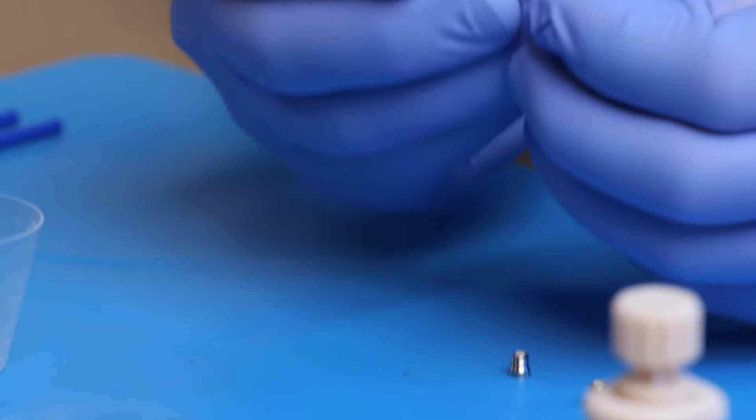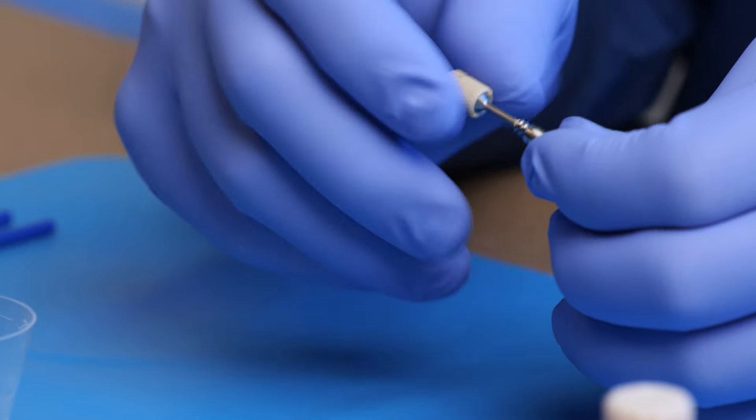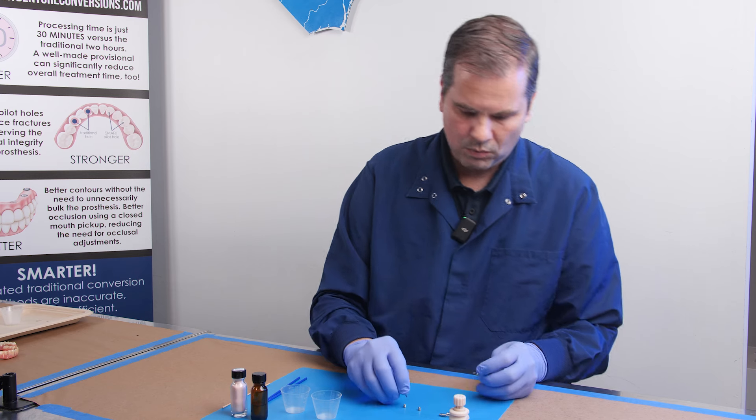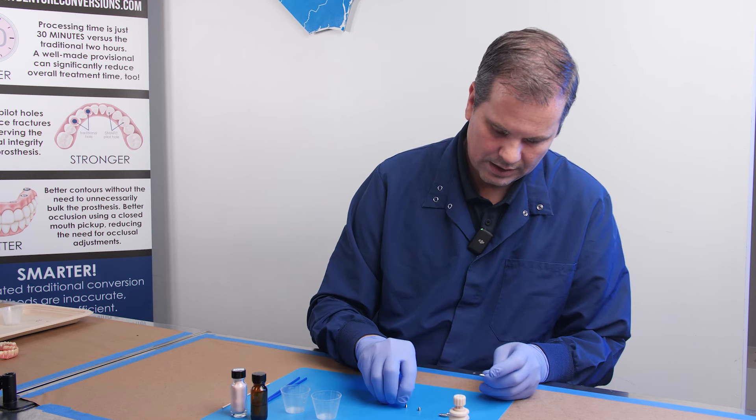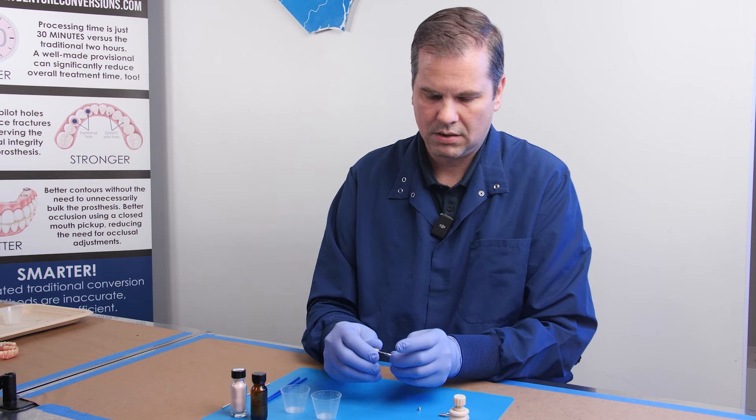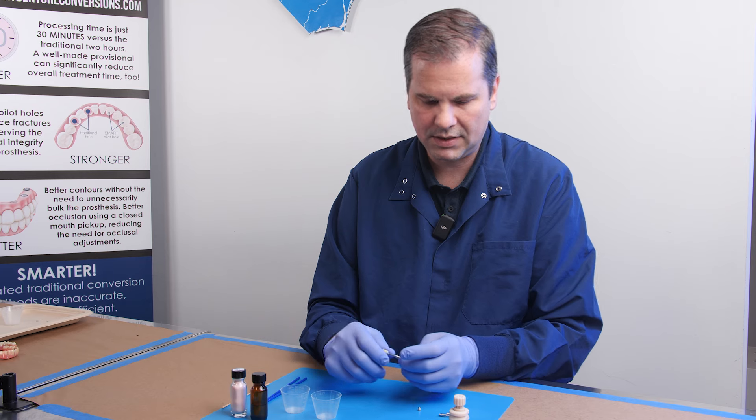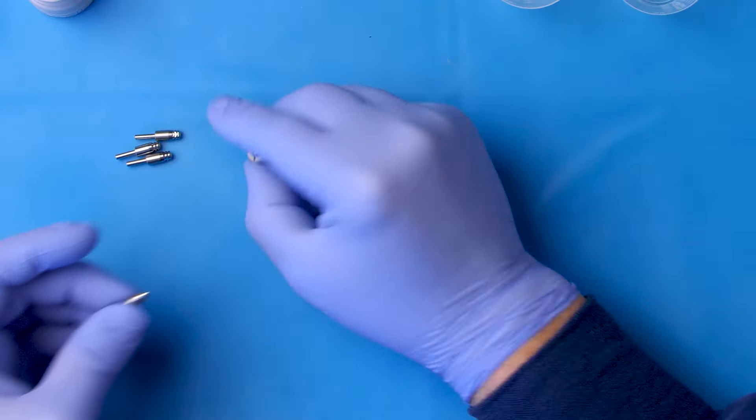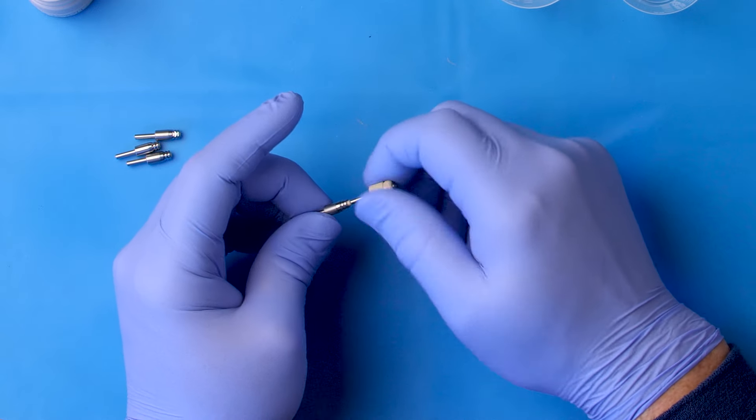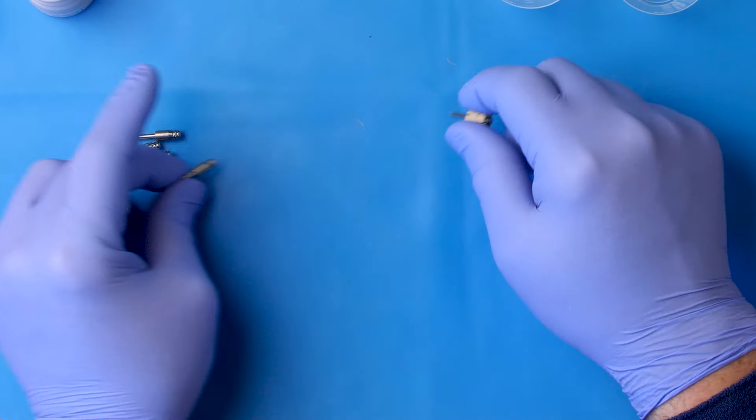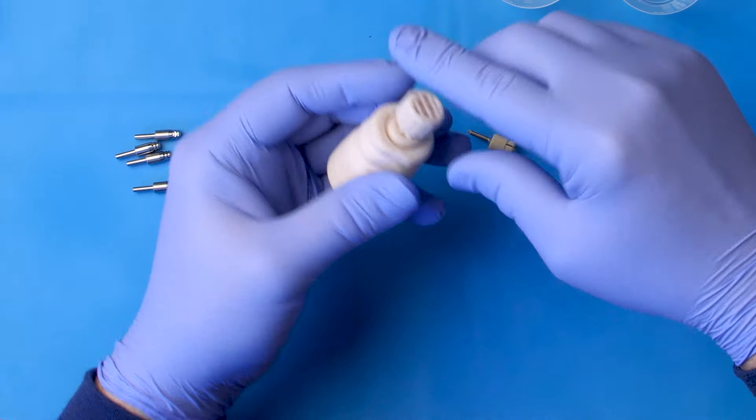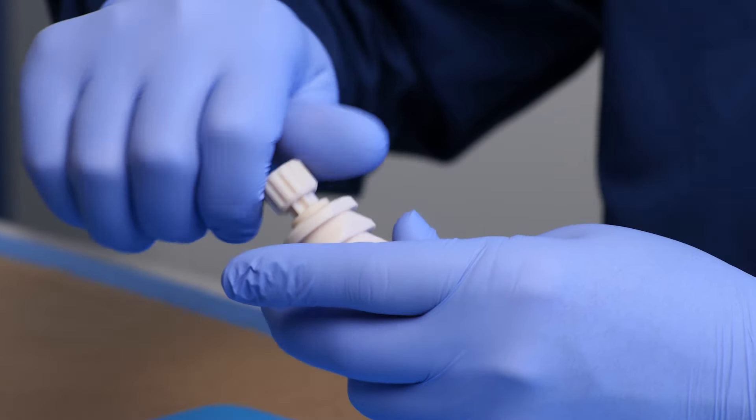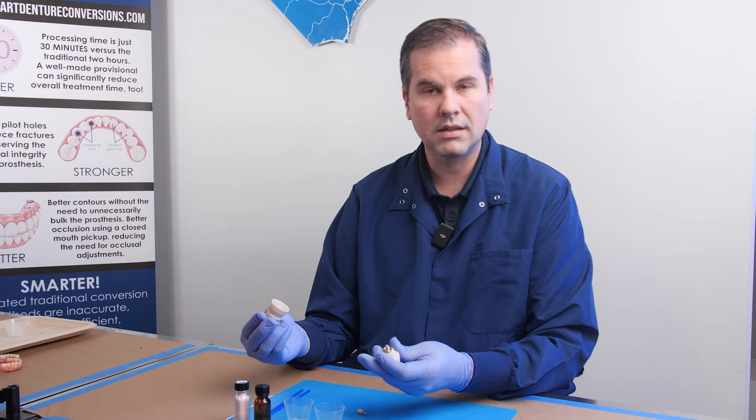Now, this torque driver is designed so that you can't over-tighten the separable fastener. It is calibrated to 0.7 inch-ounces, which is very low torque. If you use a normal driver, you run the risk of driving it, driving it, and then all of a sudden it pops off. And you're like, oh no, I just broke my screw.